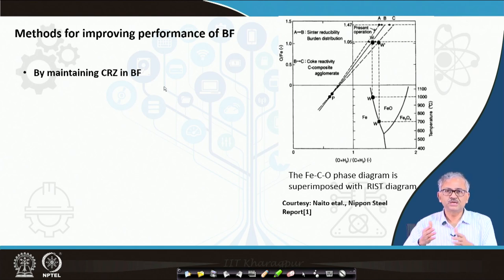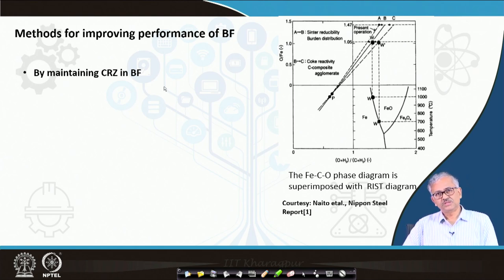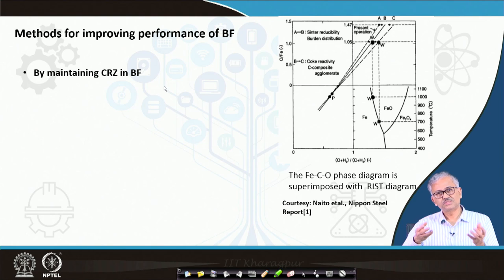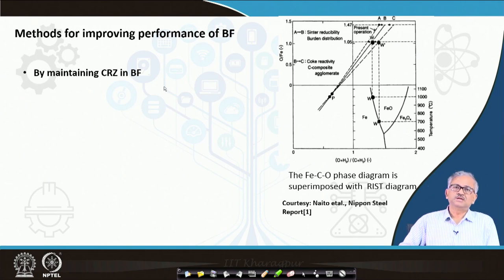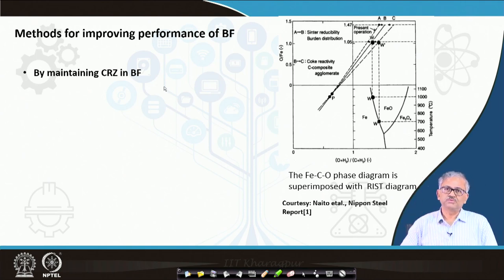Wüstite reduction has a very low CO utilization efficiency — 70% CO will be at equilibrium. So if you have a shear jet, 70% CO in the CO-CO2 mixture will be at equilibrium, and that CO when it moves up will extract the oxygen from the higher oxides.